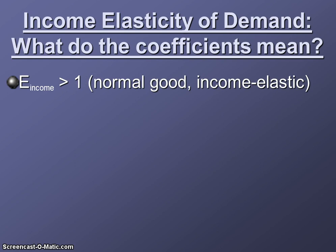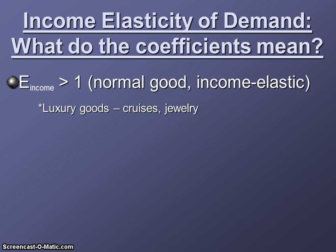If your answer for income elasticity of demand is a positive number, anytime it's positive we know it's a normal good — as income increases, you buy more; as income decreases, you buy less. When your income elasticity of demand is greater than one, not only does it mean it's normal, but it's also income elastic. Income elastic goods are luxury goods — things you're buying just because you can.